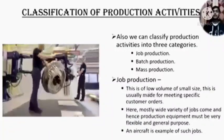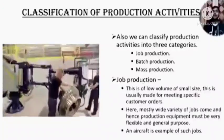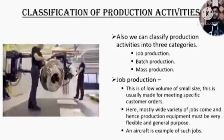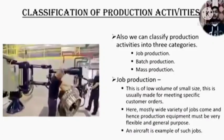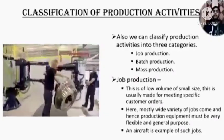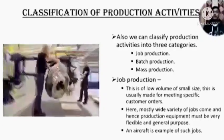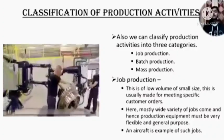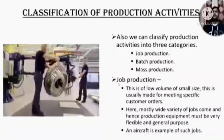Now the classification of production activities. We can classify production activities into three broad categories: job production, batch production, or mass production. First of all, job production. Job production is low volume, or say small size. This is usually made to meet a specific customer order. Here, mostly a wide variety of jobs come and hence production equipment must be very flexible and general purpose. An aircraft is an example. In this animation, we can clearly see they are working on one particular job — this is called single job production.